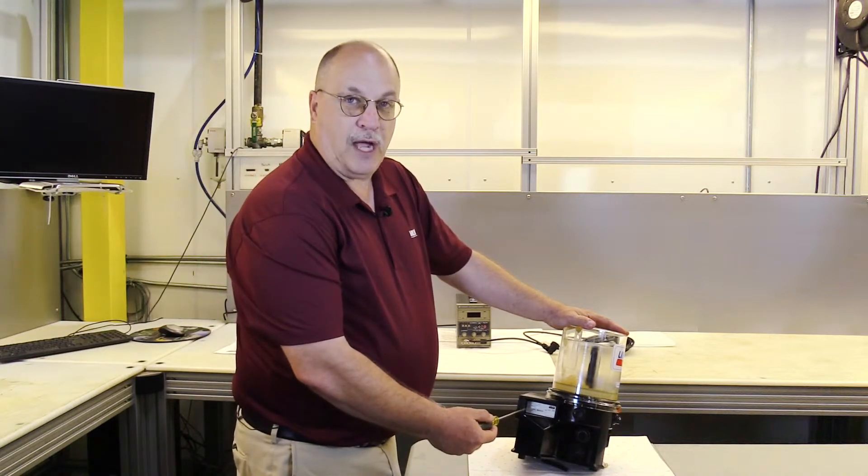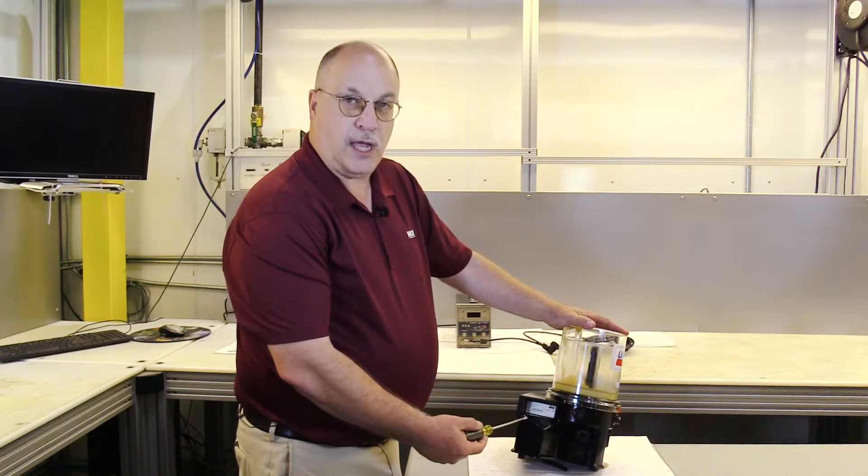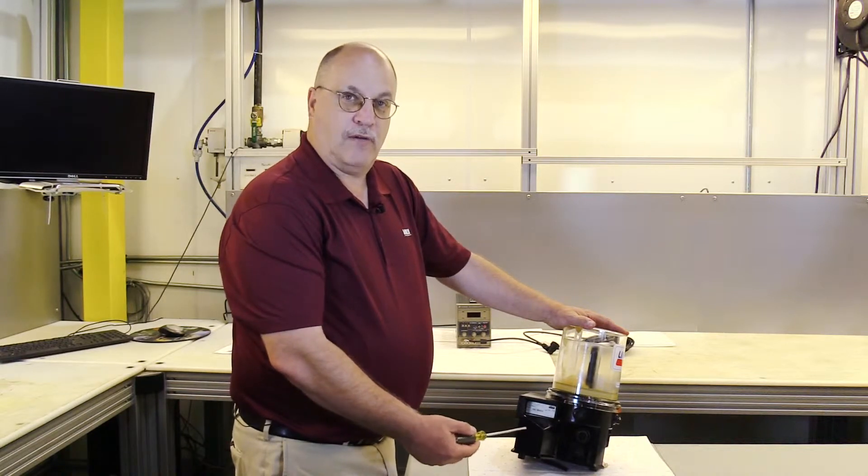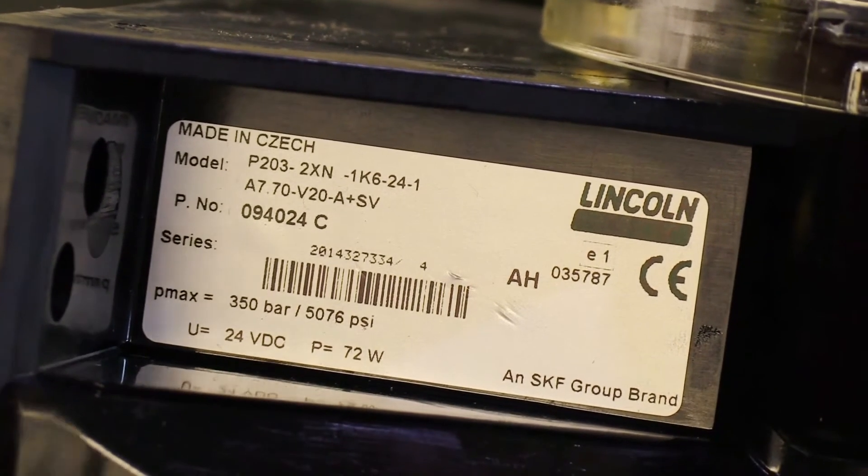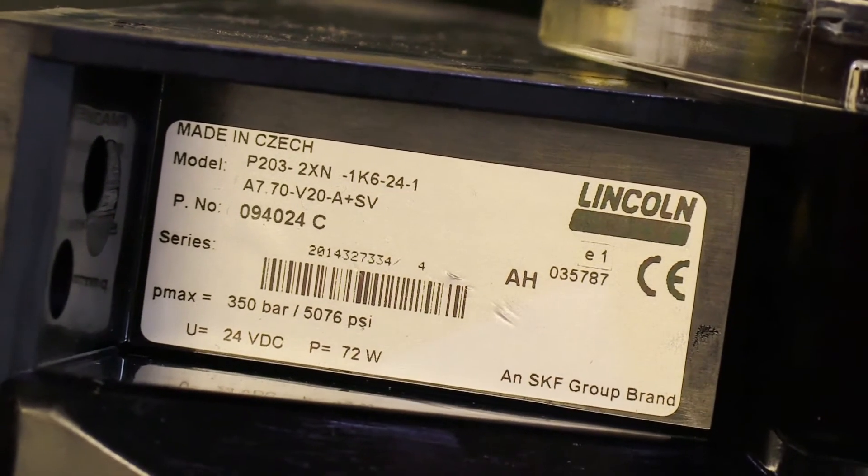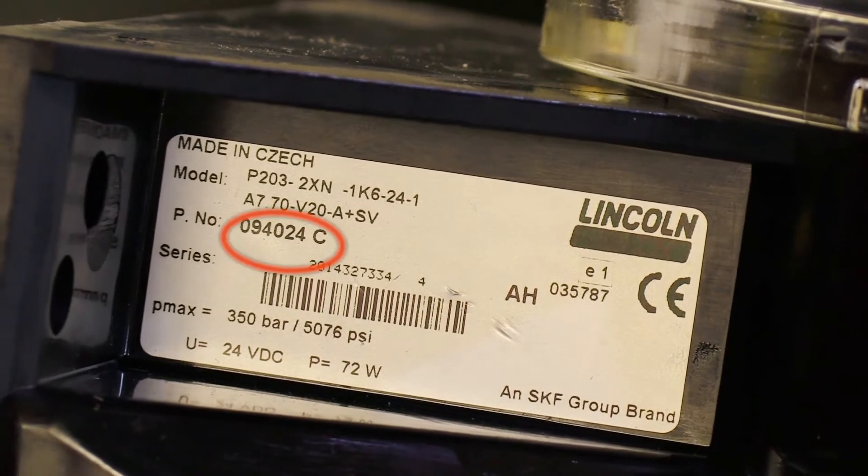Typically located on the left hand back corner of the pump is a service tag. That service tag is going to have a model number on it and also a serial number. In this case, you have a series of numbers—there will be a serial number and a model number. Usually that number starts with a zero.